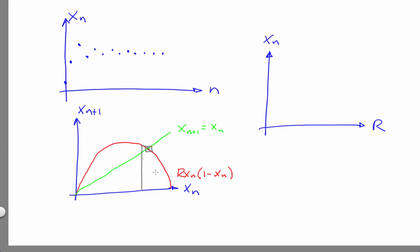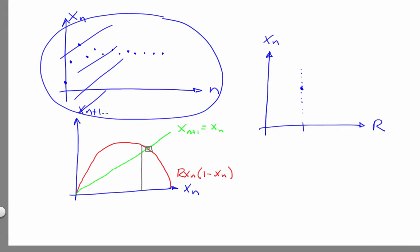In this case, those points would all fall on top of each other. So each vertical slice of the bifurcation diagram is one time domain plot like this, with the transient removed, viewed from the side.